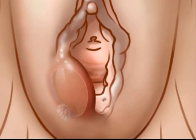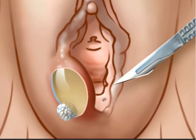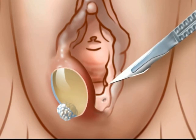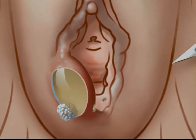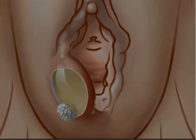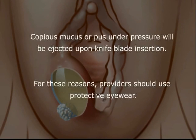A 1-centimeter incision is made using a scalpel with a number 11 blade. The blade pierces the skin and underlying cyst or abscess. Copious mucus or pus under pressure would be ejected upon knife blade insertion. For these reasons, providers should use protective eyewear.